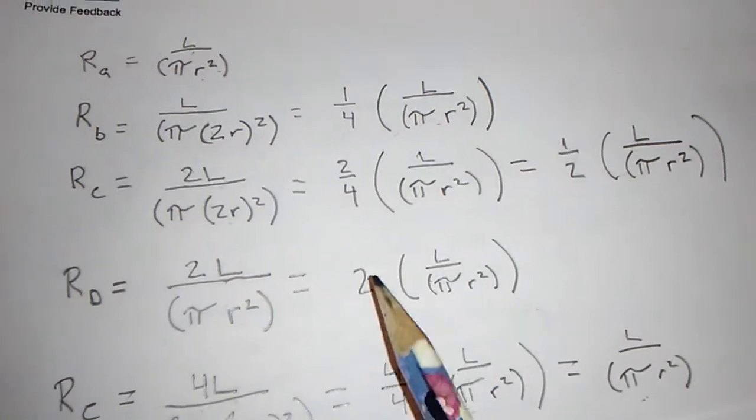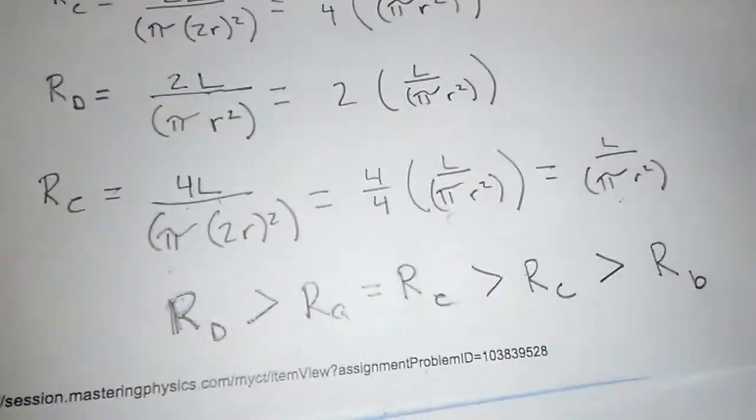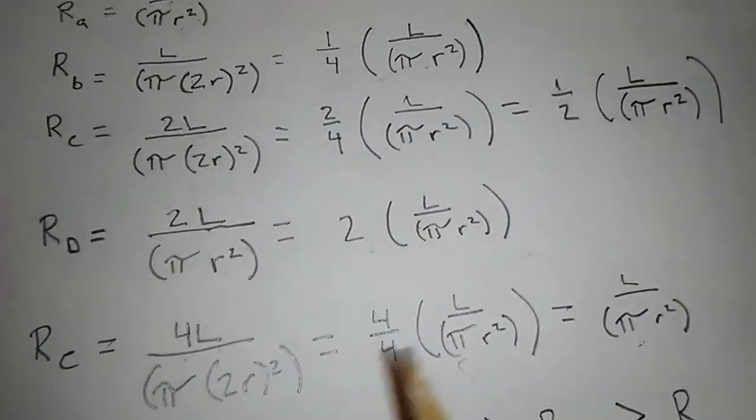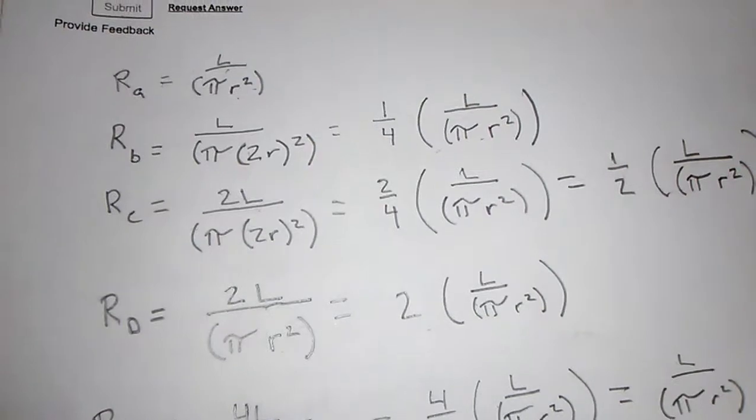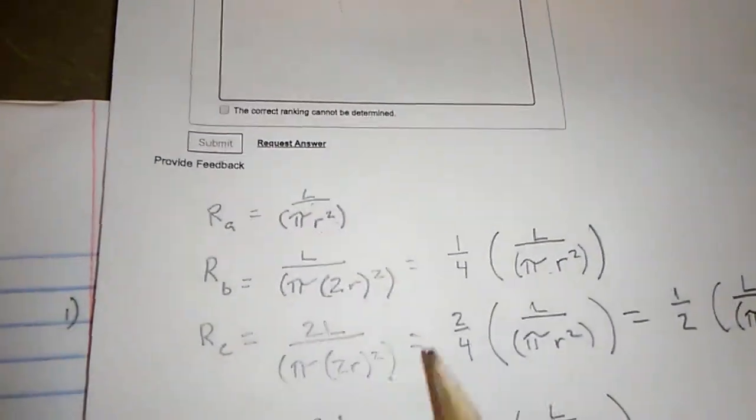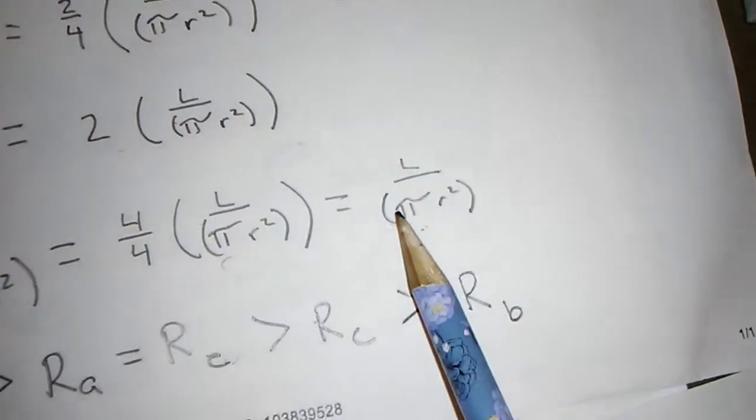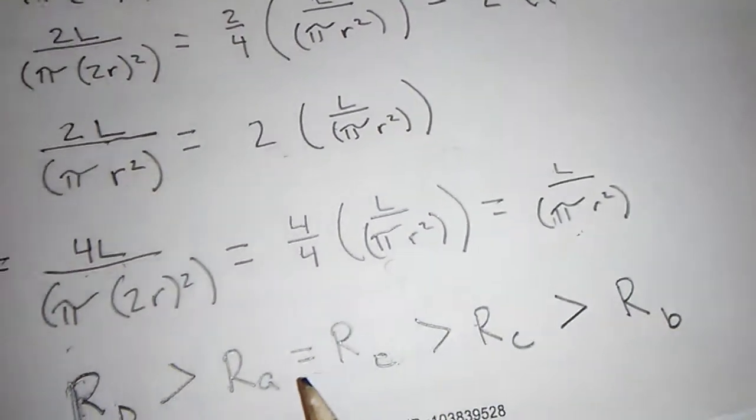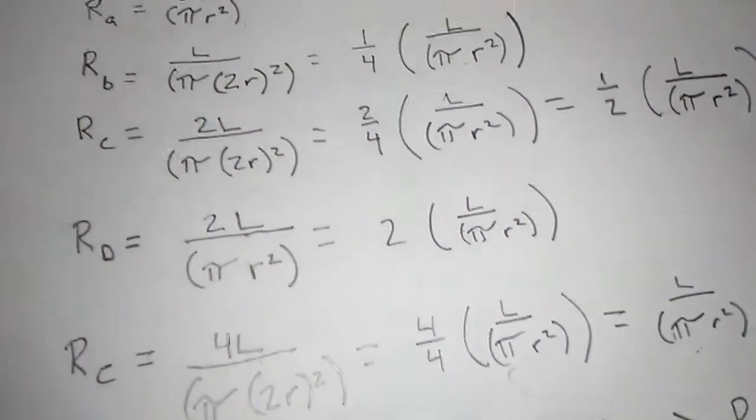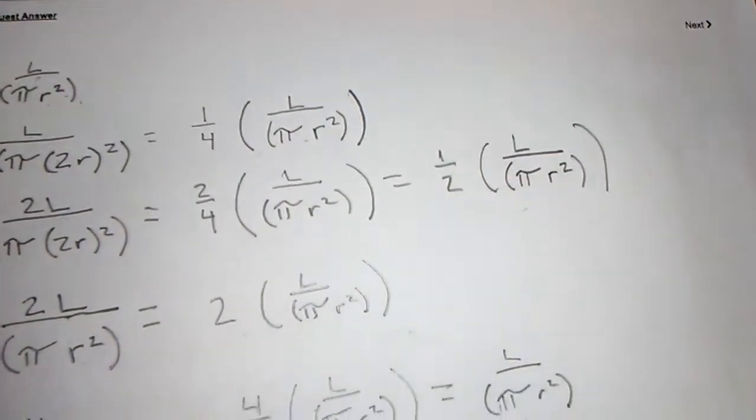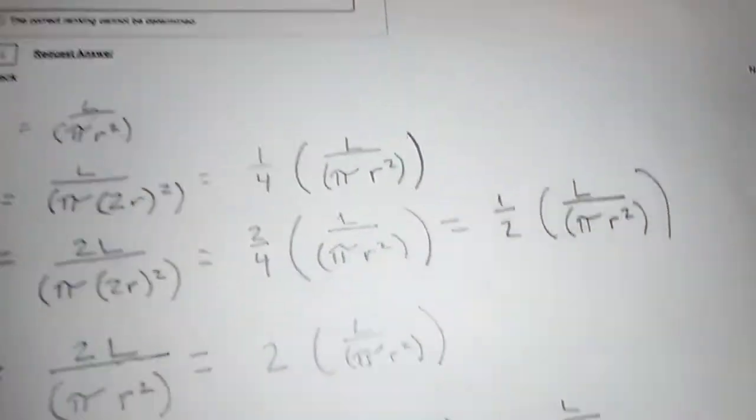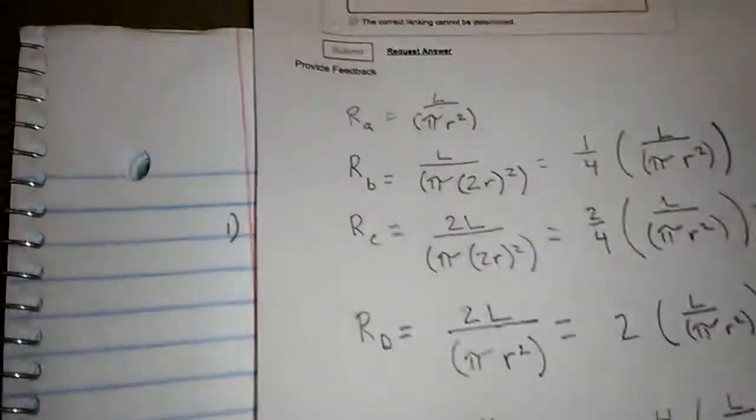So now let's rank them in order. The one that has two times the resistance of the others, that's first. And then these are equal: RA and RE. RC is one half, and then the one that's a quarter is last. And so we'll rank them in that order.